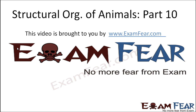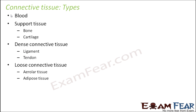Hello friends, this video on structural organization of animals part 10 is brought to you by examfear.com. Now we will talk about the different types of connective tissue. The types include blood, support tissue, dense connective tissue, and loose connective tissue.